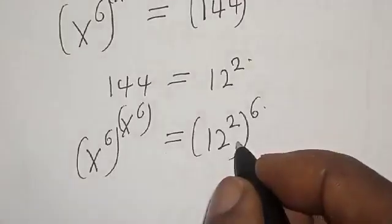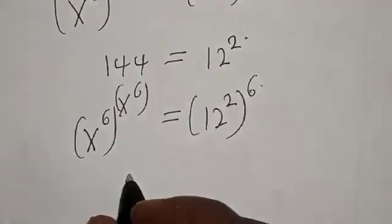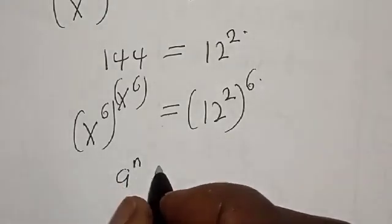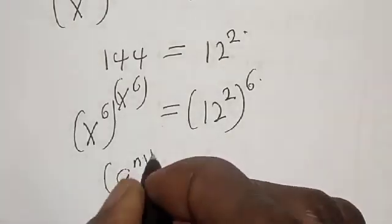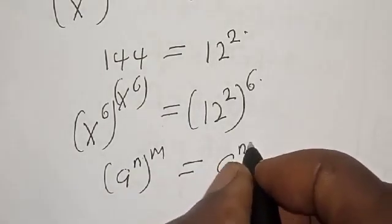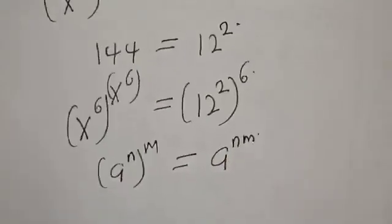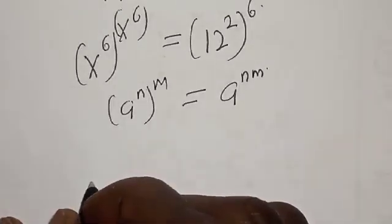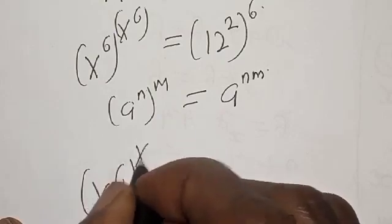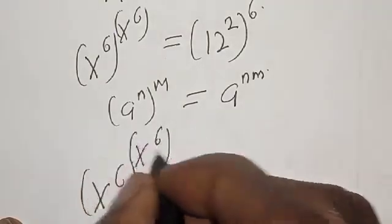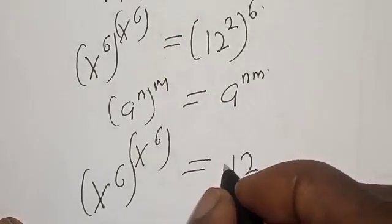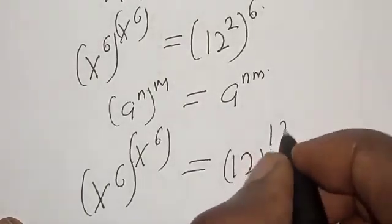Also for the right hand side, remember that a raised to power of n raised to power of m is the same thing as a raised to power of n times m. Now s raised to power of s raised to power of s raised to power of 6 is equal to 12 raised to power 12.